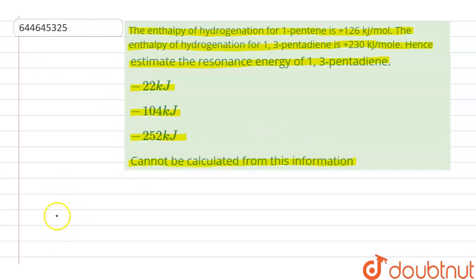We are given first that the enthalpy of hydrogenation of 1-pentene. So 1-pentene is this and hydrogenation will form alkane that is pentane. Right. And Delta H for this is given as 126 kJ per mole.